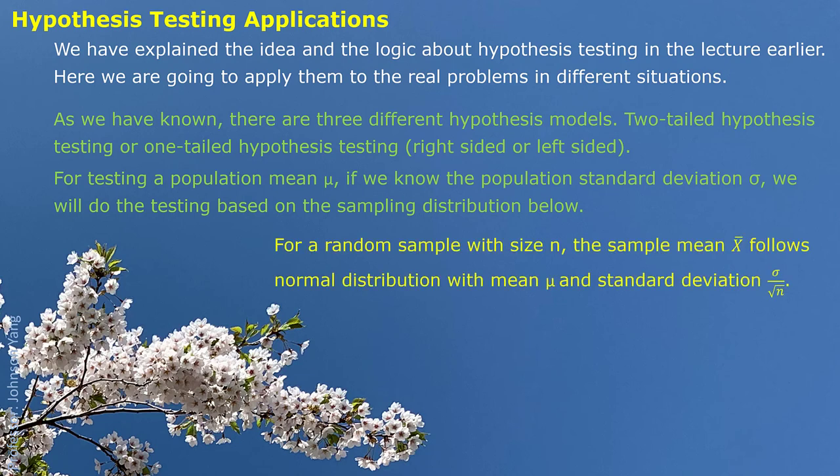That is, for a random sample with size n, the sample mean x-bar follows a normal distribution with mean mu, same as the population mean, and standard deviation sigma divided by square root n. This can be denoted as capital N, which represents normal distribution, with two parameters: mu and standard deviation.